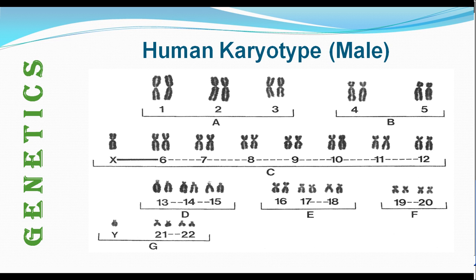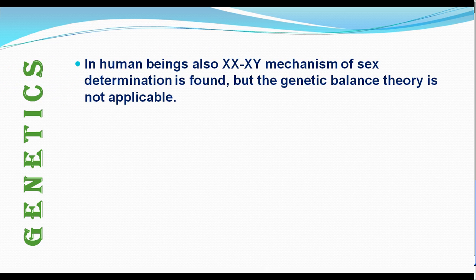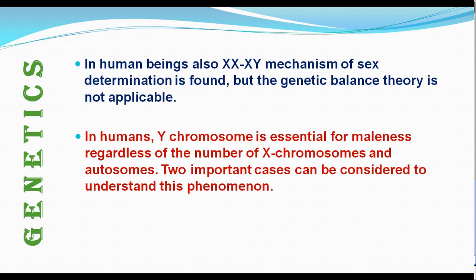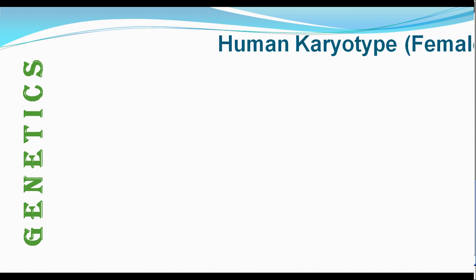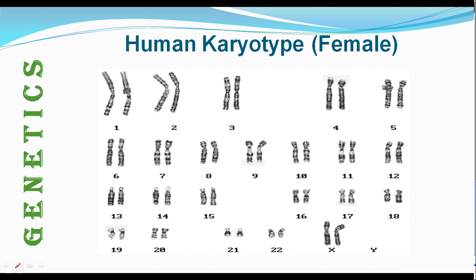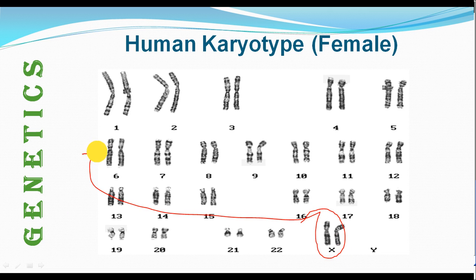However, some scientists claim that the 21st is the smallest, not the 22nd chromosome. In the case of the female, the karyotype is slightly different — it has two X chromosomes. The last two chromosomes placed here are longer, and their position is in between the 5th and 6th chromosome.